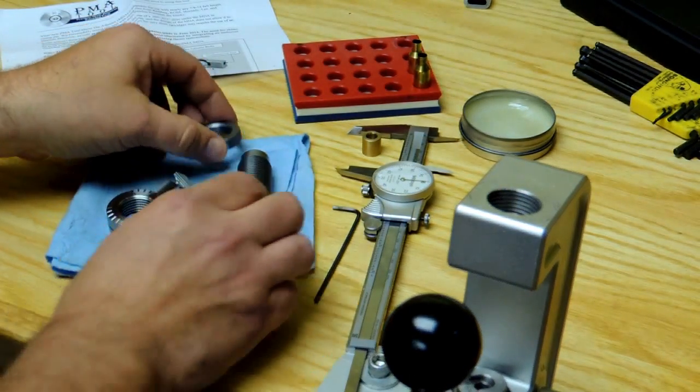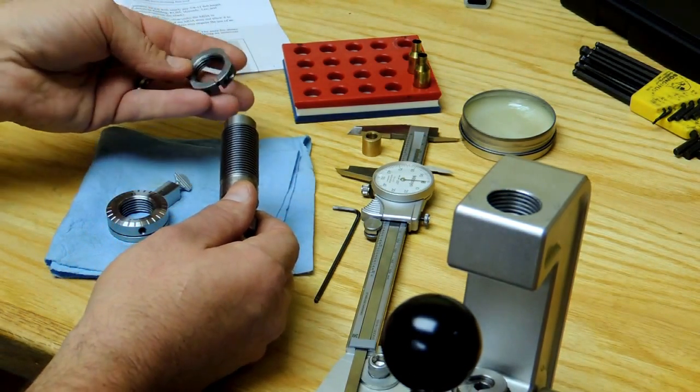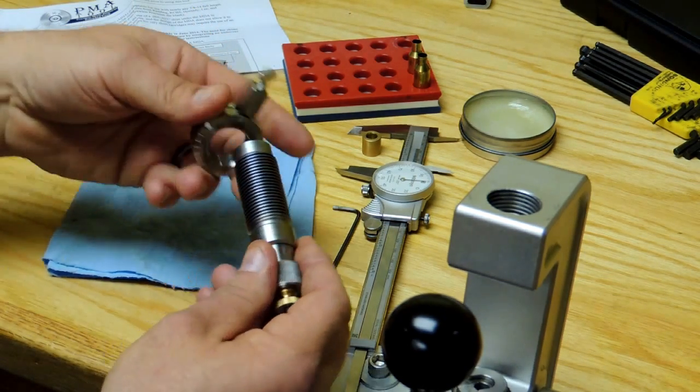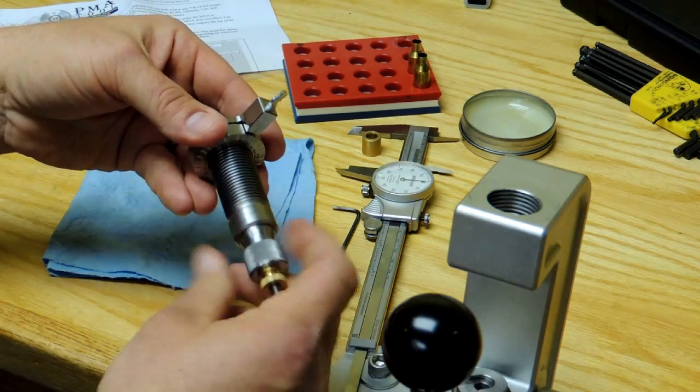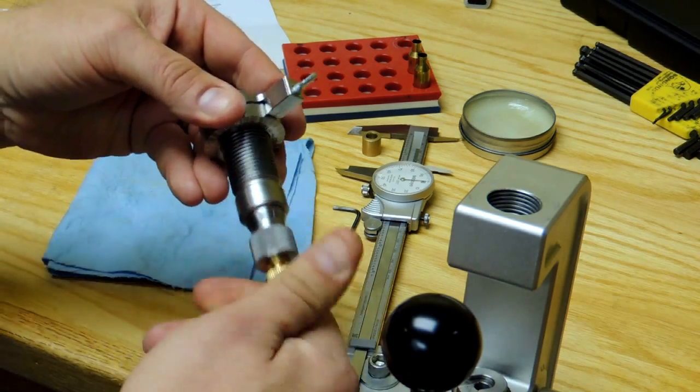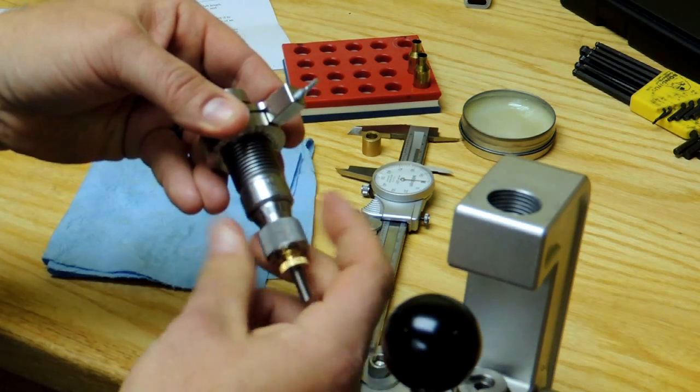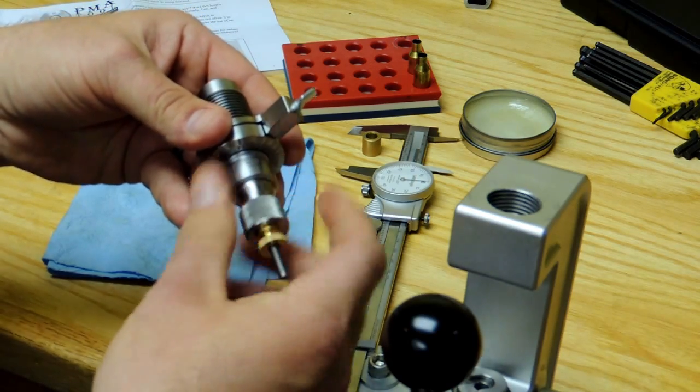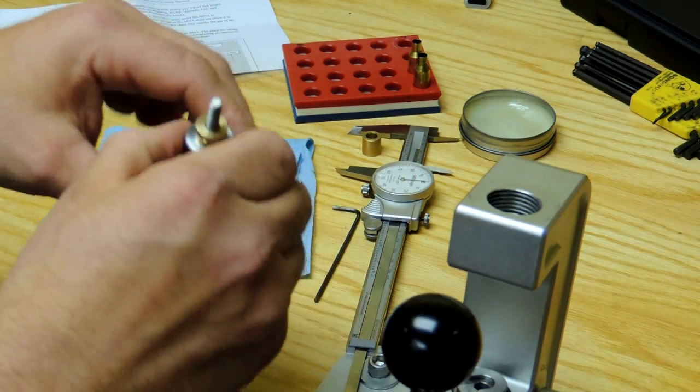The first step is to remove the existing lock ring from your sizing die. Next, we thread the die into the micro die adjuster until we have run out of threads, clear to the top of the die.